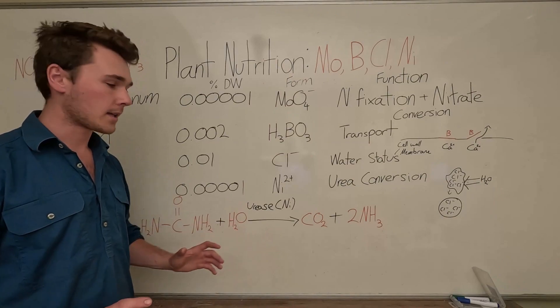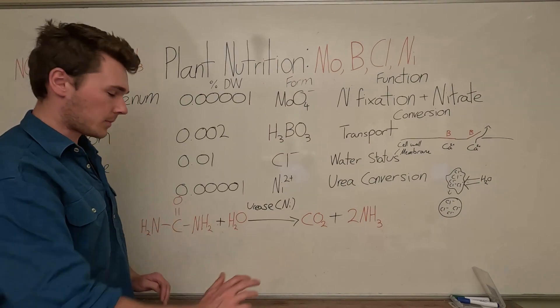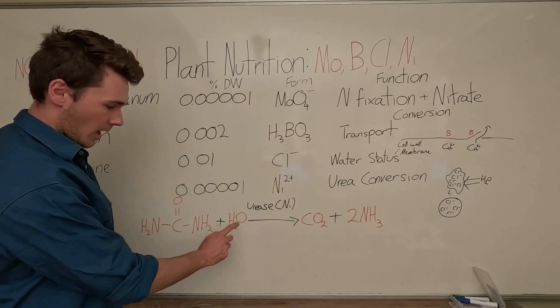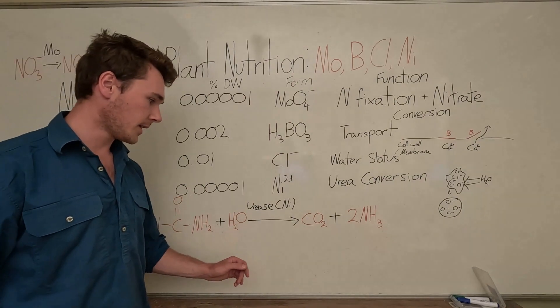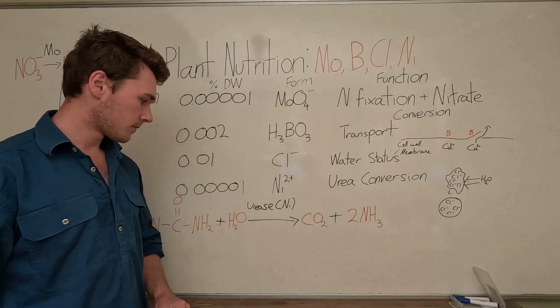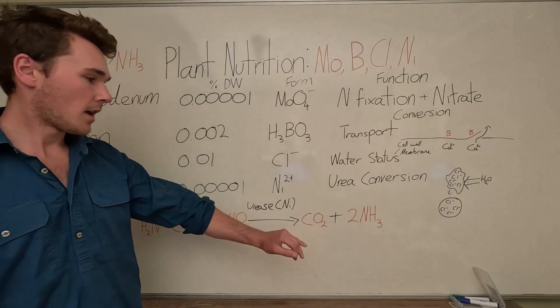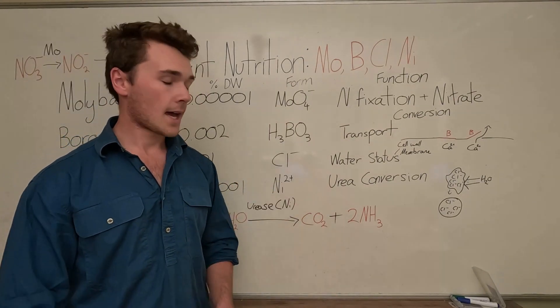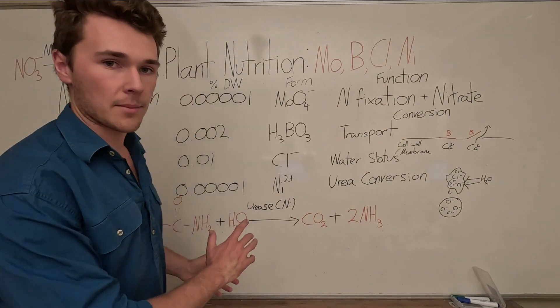We have our urea, we have water. Water is used in this process. Urease is used, and then that produces carbon dioxide to produce two ammonium molecules, which can then be used by the plant.